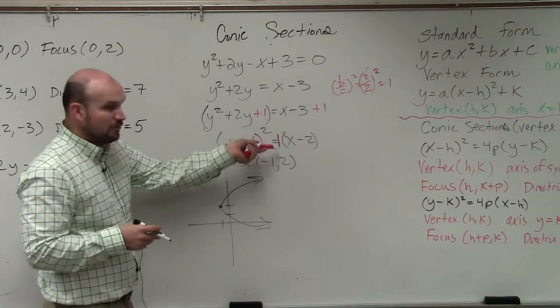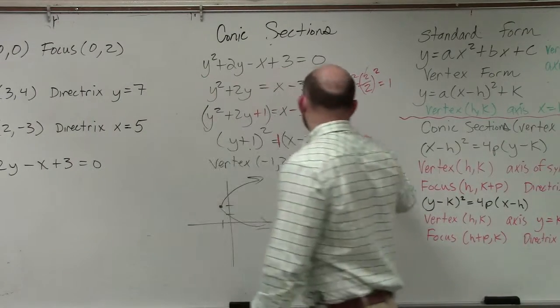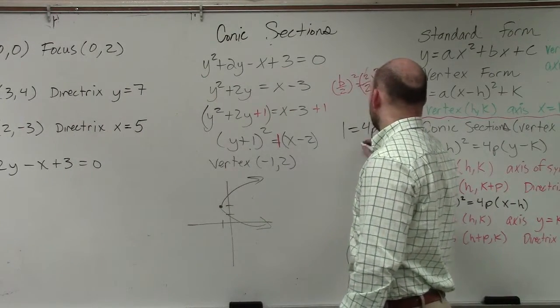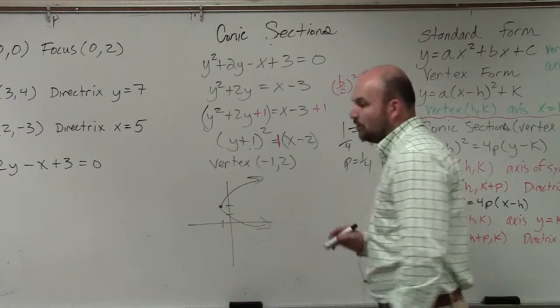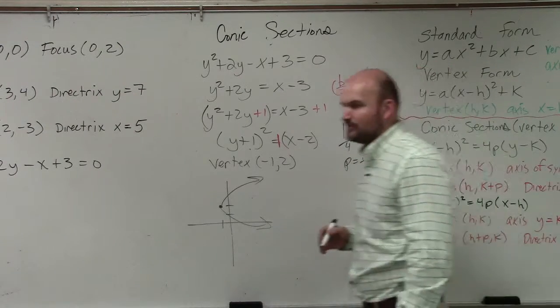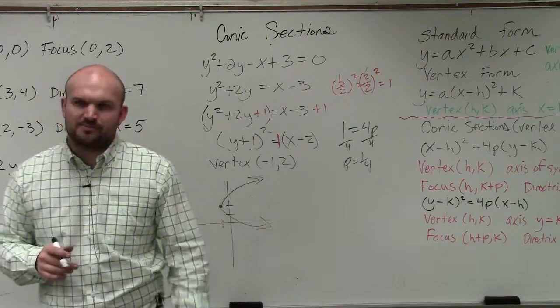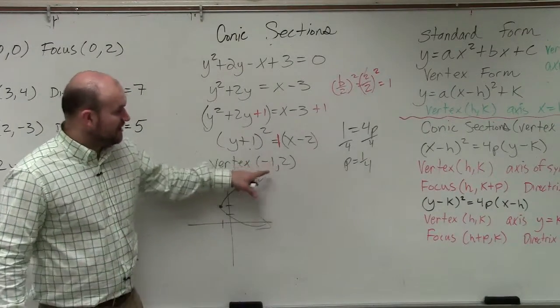Now I need to figure out what my p is. So I say 1 equals 4p. Divide by 4, divide by 4, p equals 1 fourth. This is really probably one of the most important ones, because the other ones were pretty introductory.